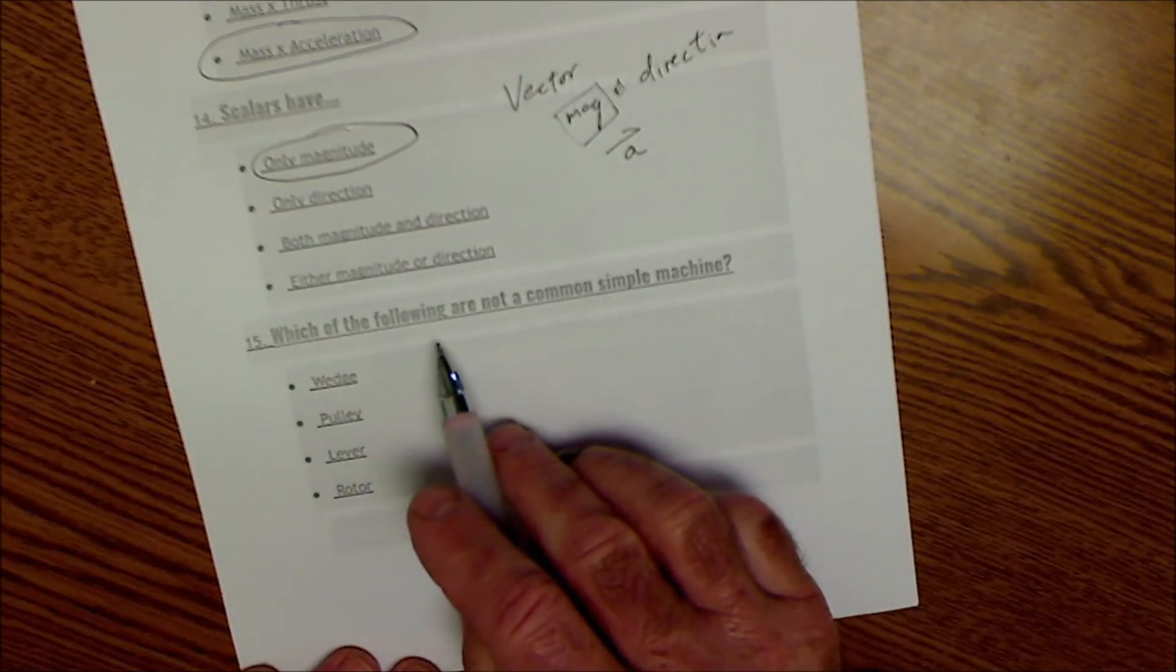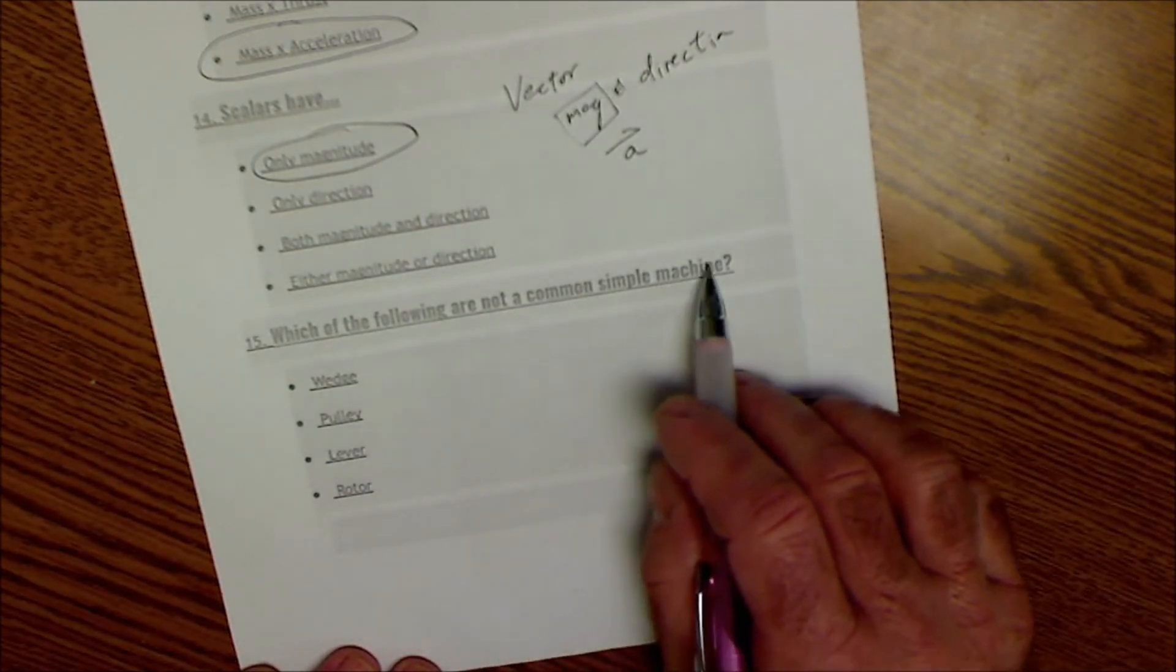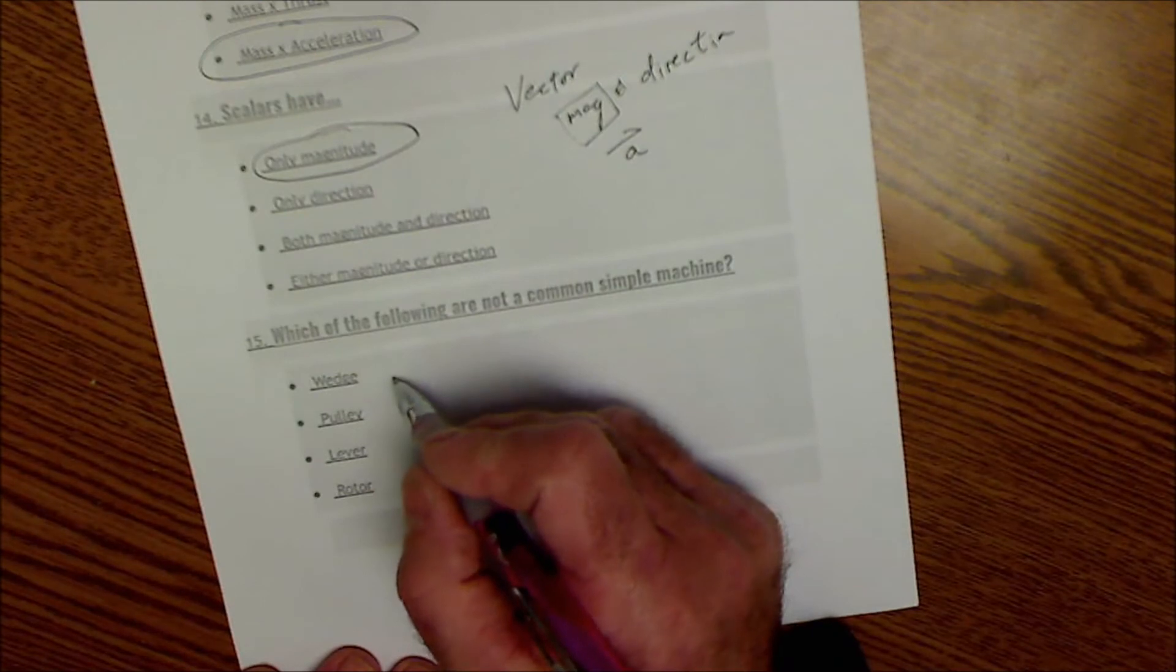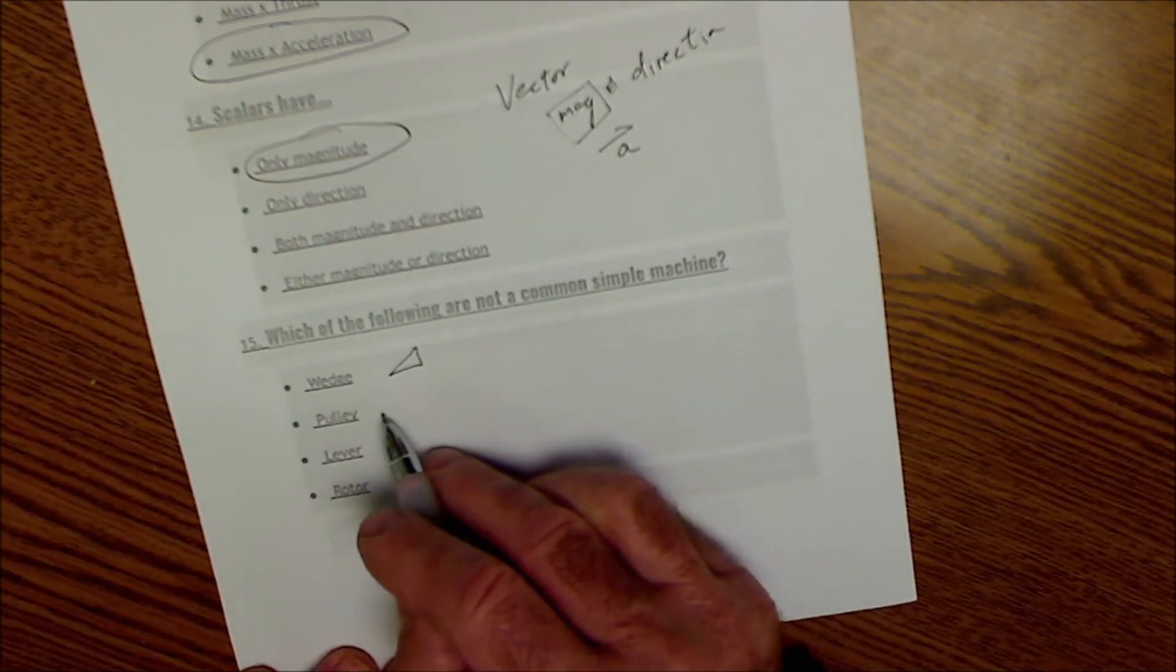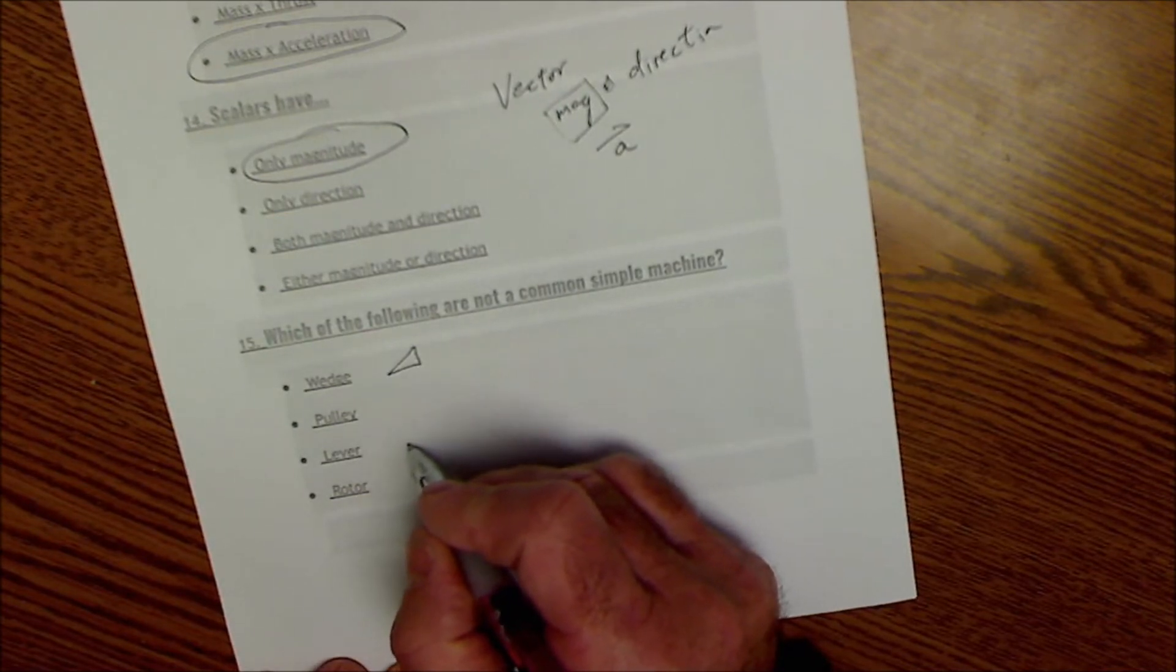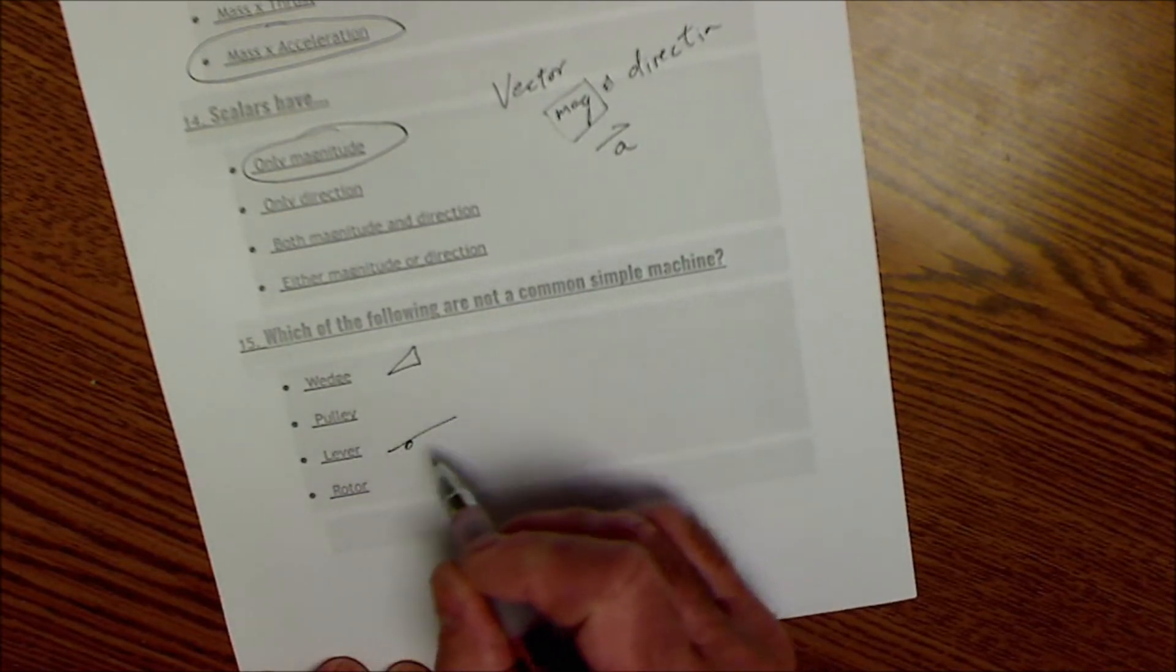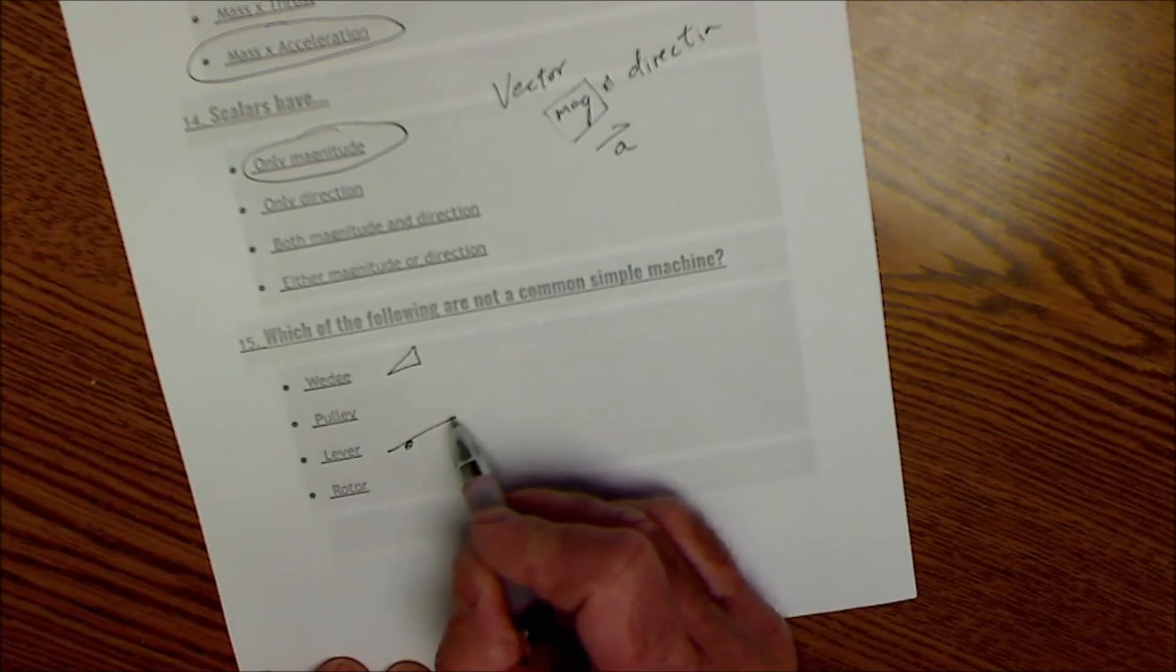Which of the following are not common simple machines. A wedge is a mechanical advantage based on that angle. A pulley is also a mechanical advantage. A lever is a mechanical advantage based on the ratio of that to that.